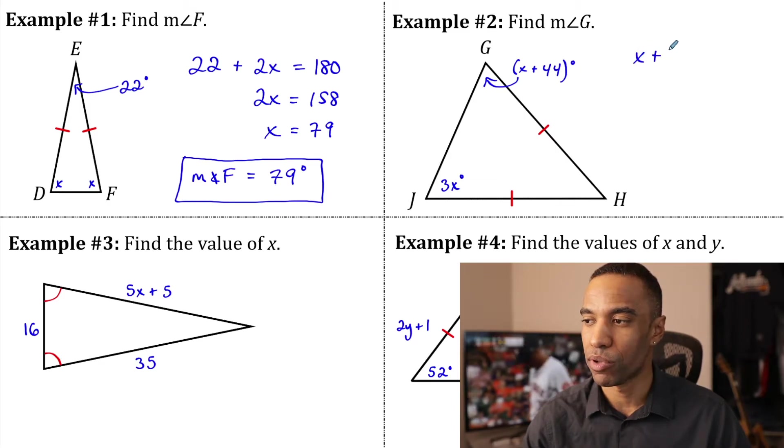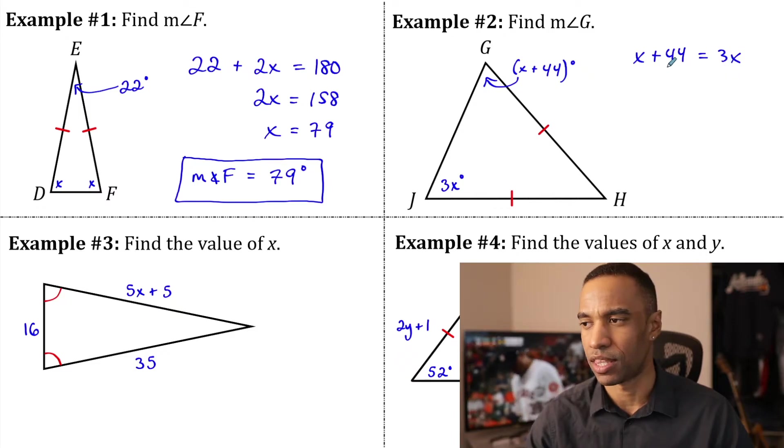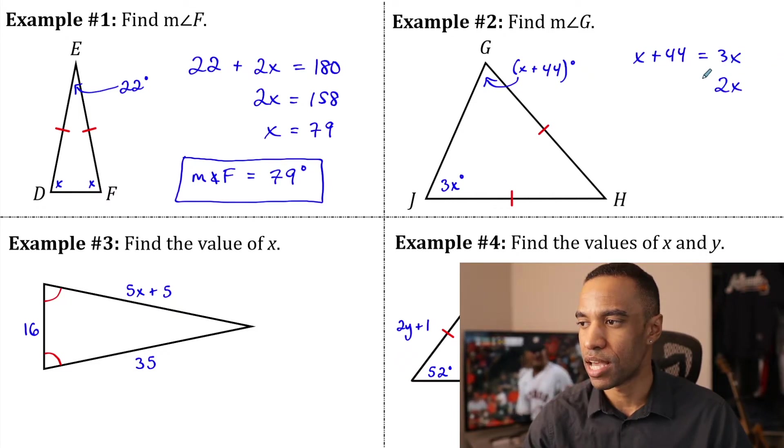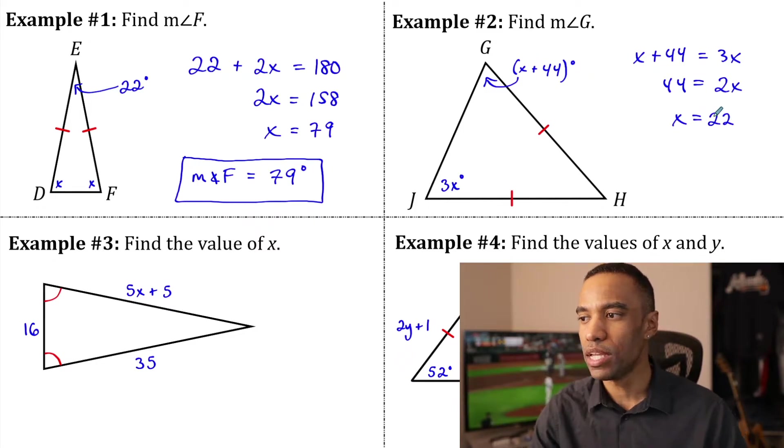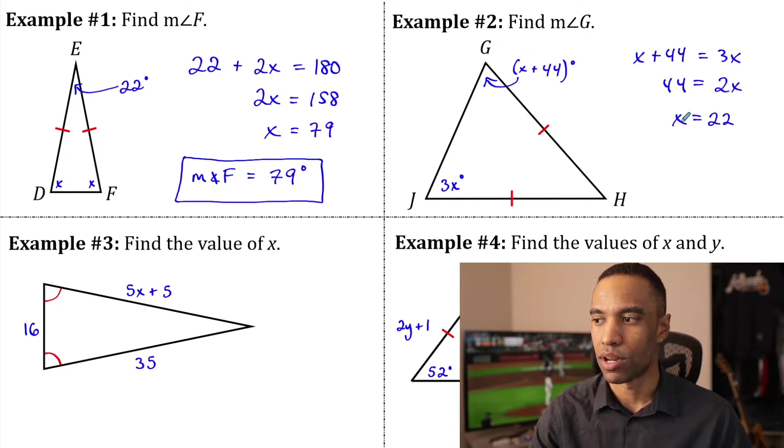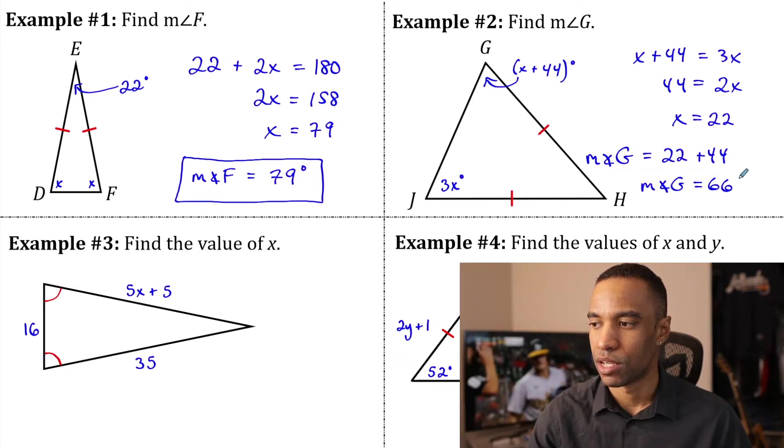And they're equal to each other. I don't need to add something up to 180 and figure it out. I just set these equal to each other here. So, here I can say that X plus 44 equals 3X. Subtract X from both sides and divide both sides by 2. It looks like we get X equals 22. We don't just need X, though. We need the measure of angle G. So, now we have to substitute 22 in for X into that scenario there. Measure of angle G equals 22 plus 44, and that's going to equal 66 degrees.